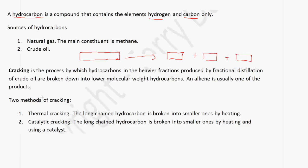There are two ways you can perform cracking: thermal cracking and catalytic cracking. In the case of thermal cracking, the long chain hydrocarbon is broken into smaller ones using heat only. In catalytic cracking, we use heat as well as a catalyst.